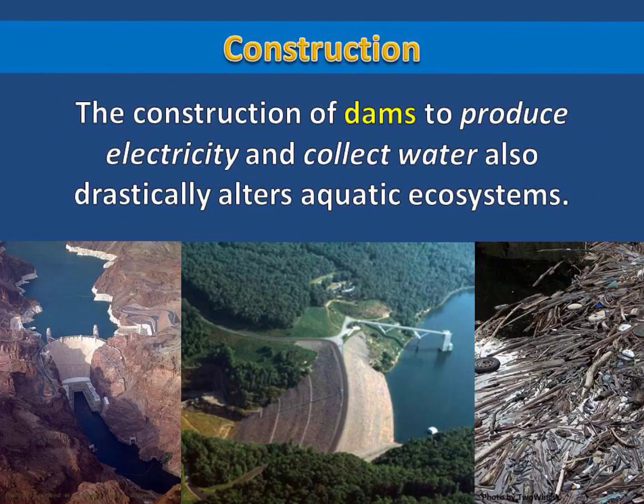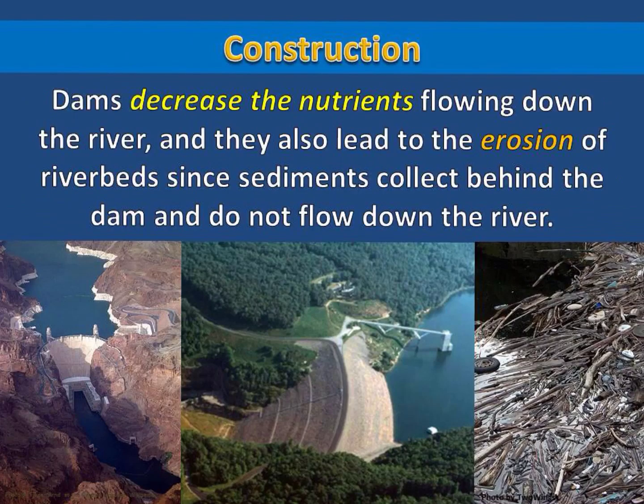The construction of dams to produce electricity and collect water also drastically alters aquatic ecosystems. Dams decrease the nutrients flowing down the river, and they also lead to the erosion of riverbeds, since sediments collect behind the dam and do not flow down the river.